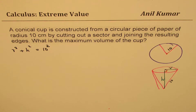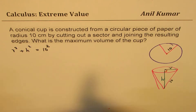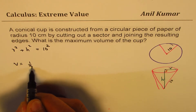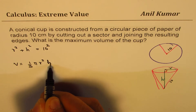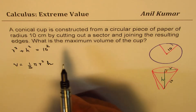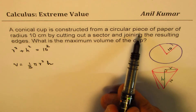We can write that R² + H² = 10² = 100. That is the relation between R and H. As far as the volume of a cone is concerned, we know volume is one-third of π r² H.